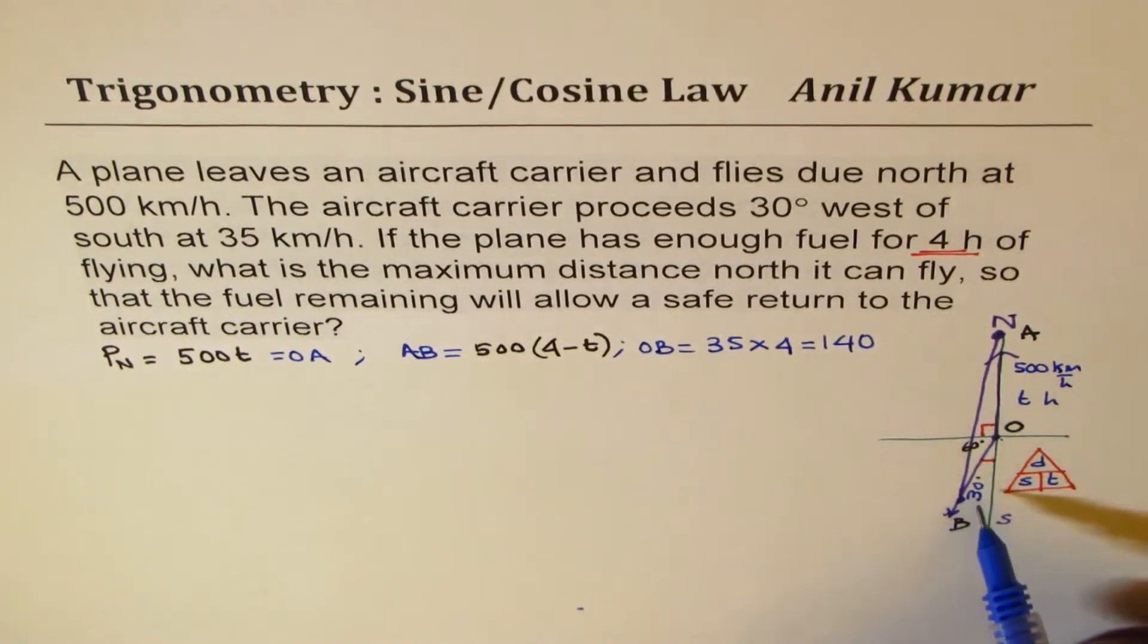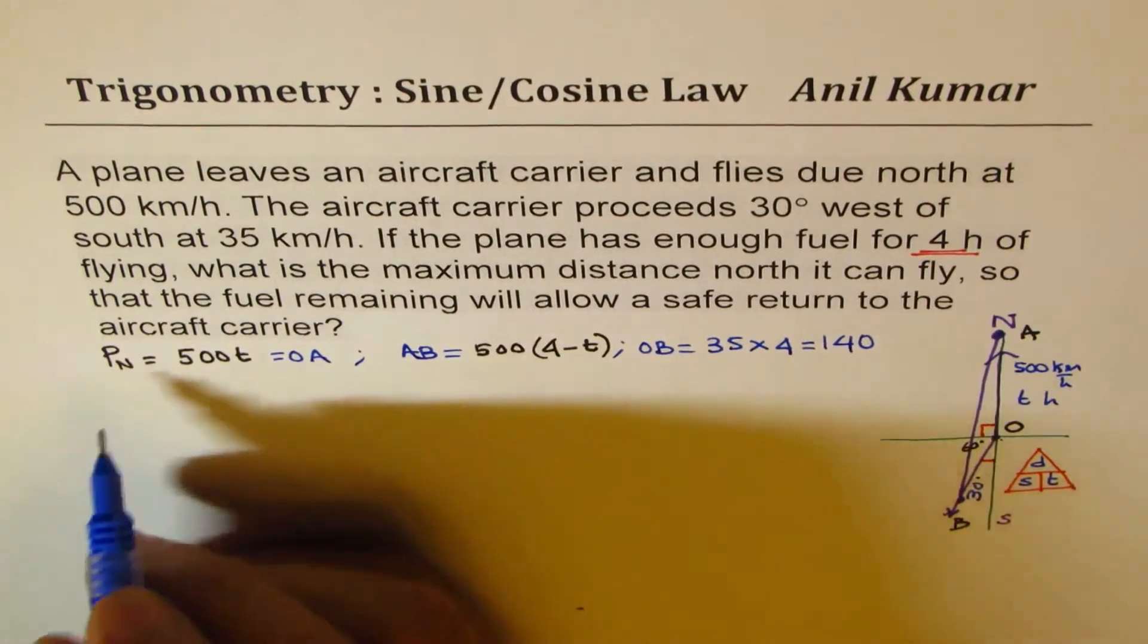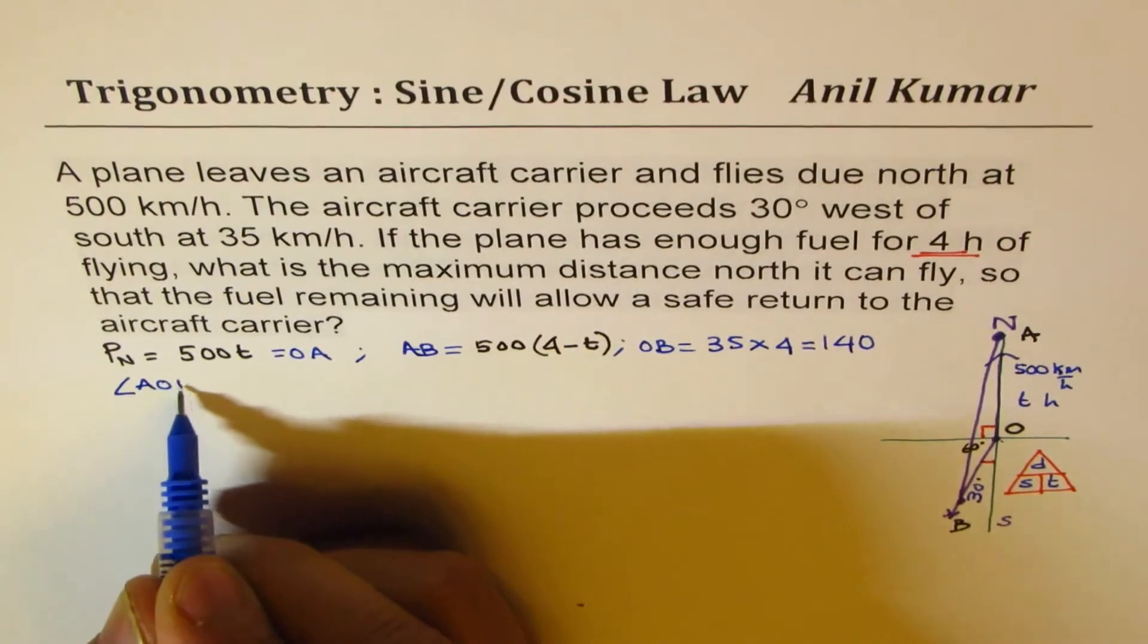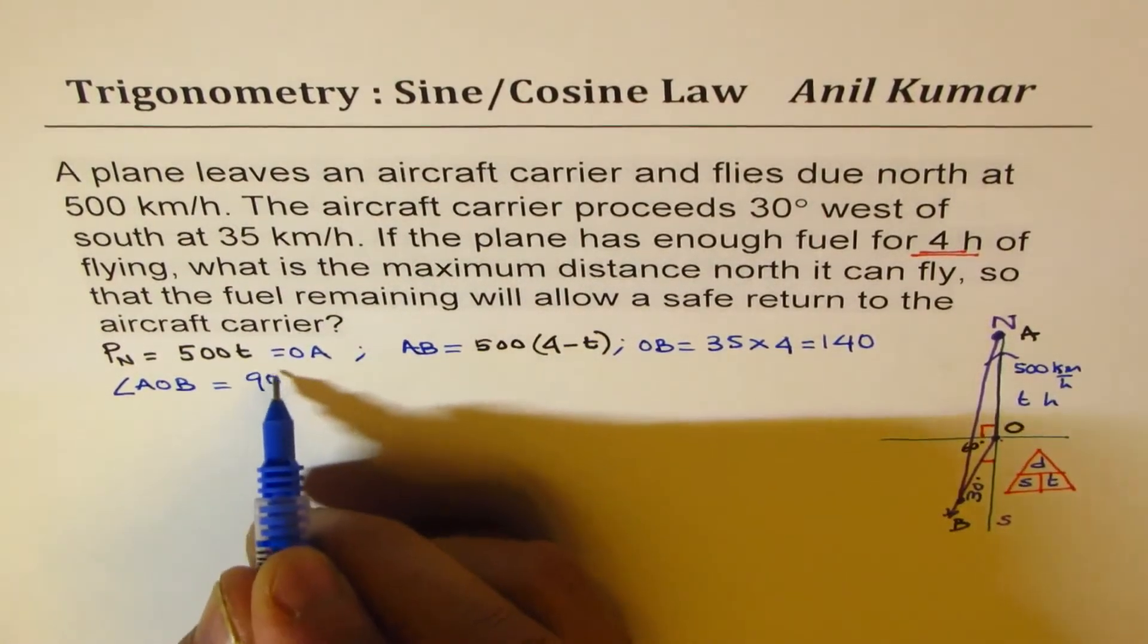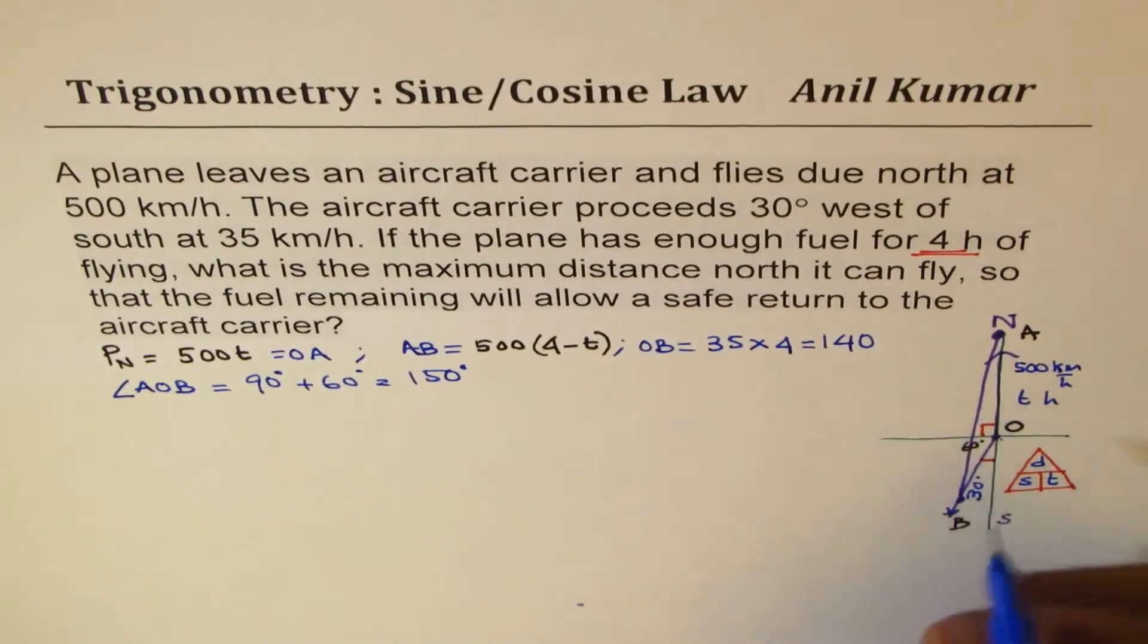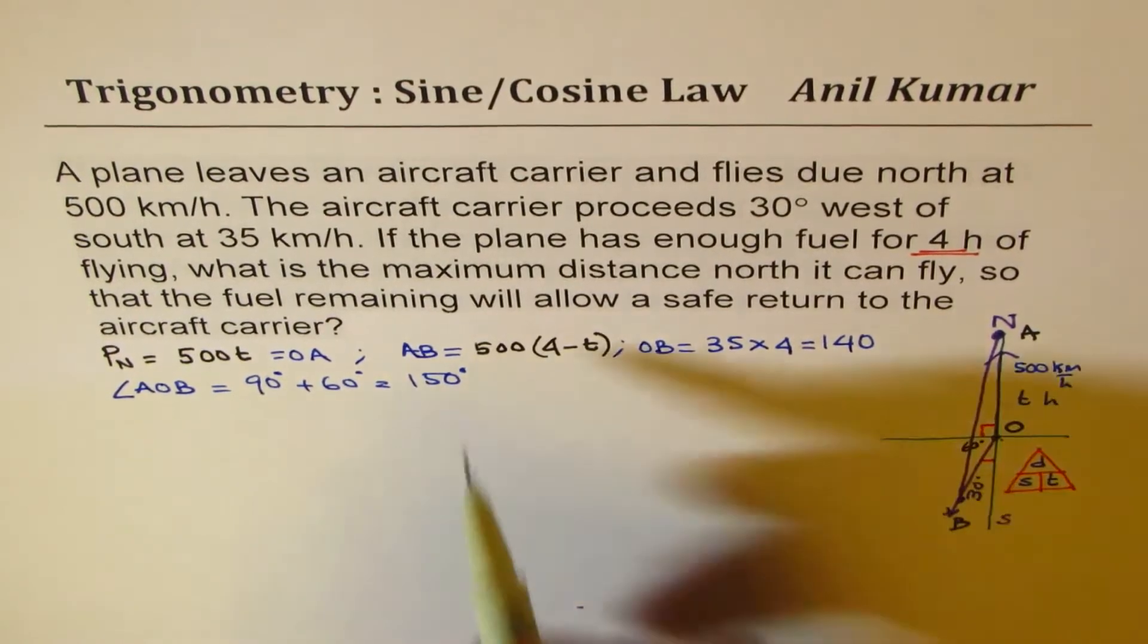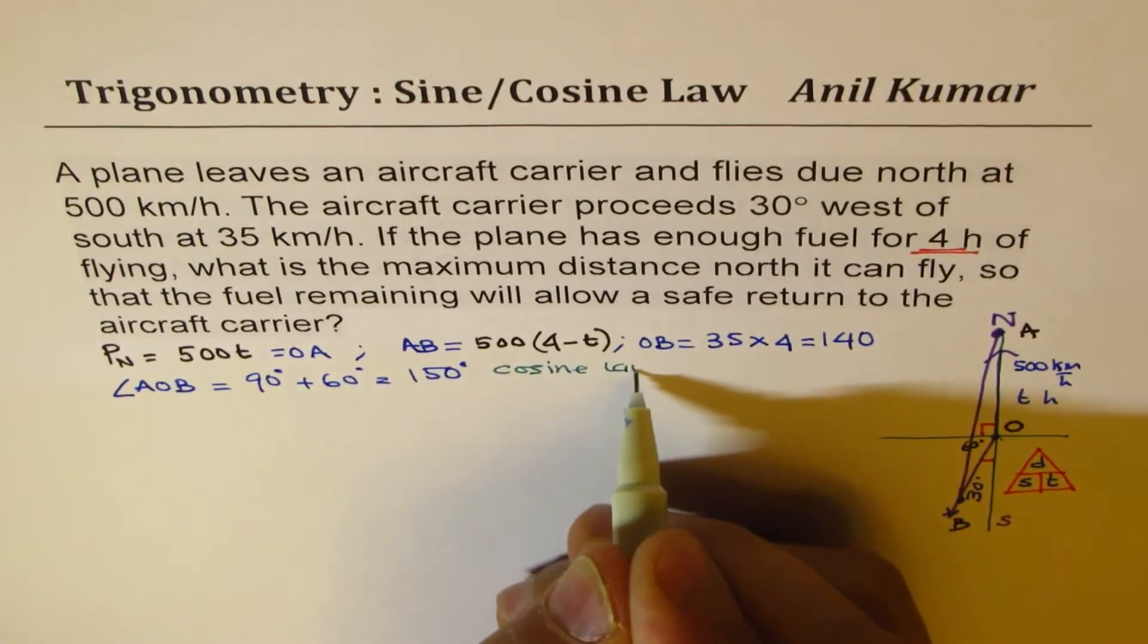So now we have a triangle where we know 3 sides and also the angle. We also know the angle AOB. This angle is 90 plus 60, which is 150 degrees. So if you know 3 sides and an included angle, you can always apply cosine law. So we'll apply cosine law to solve this question.